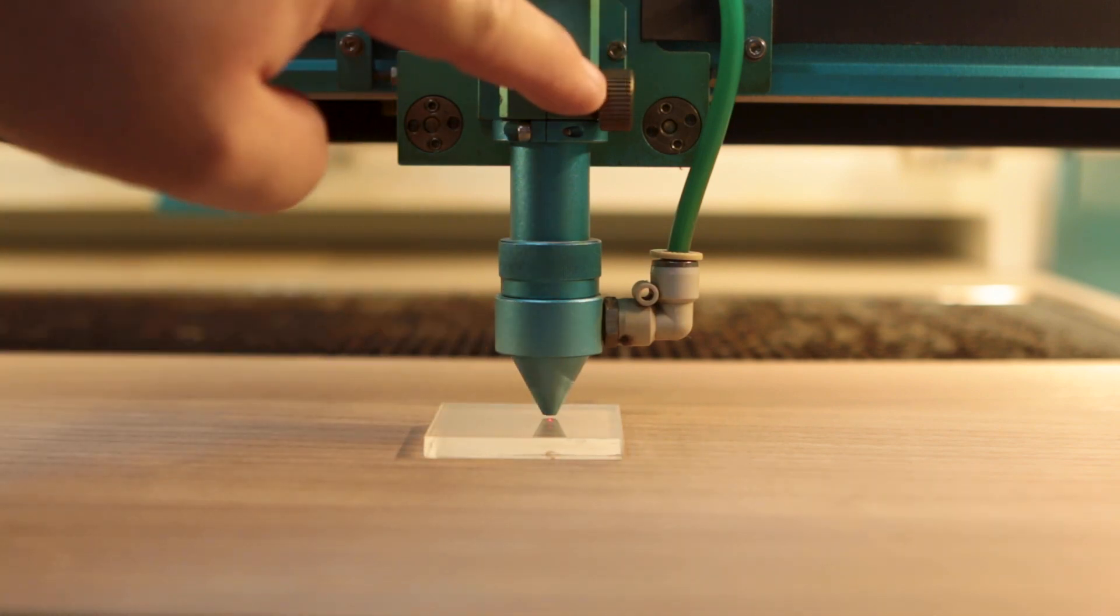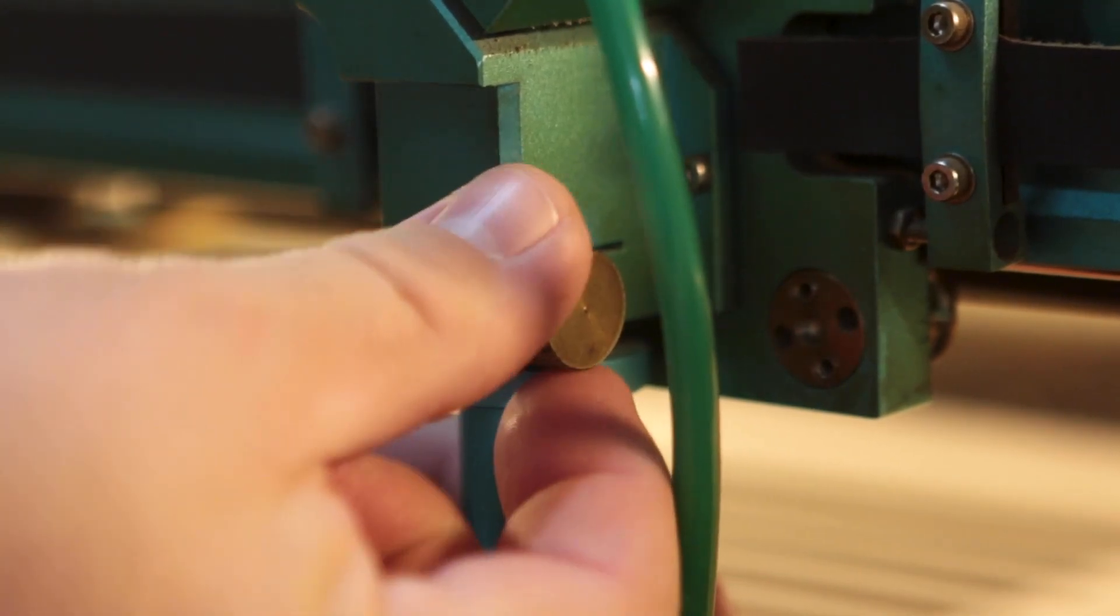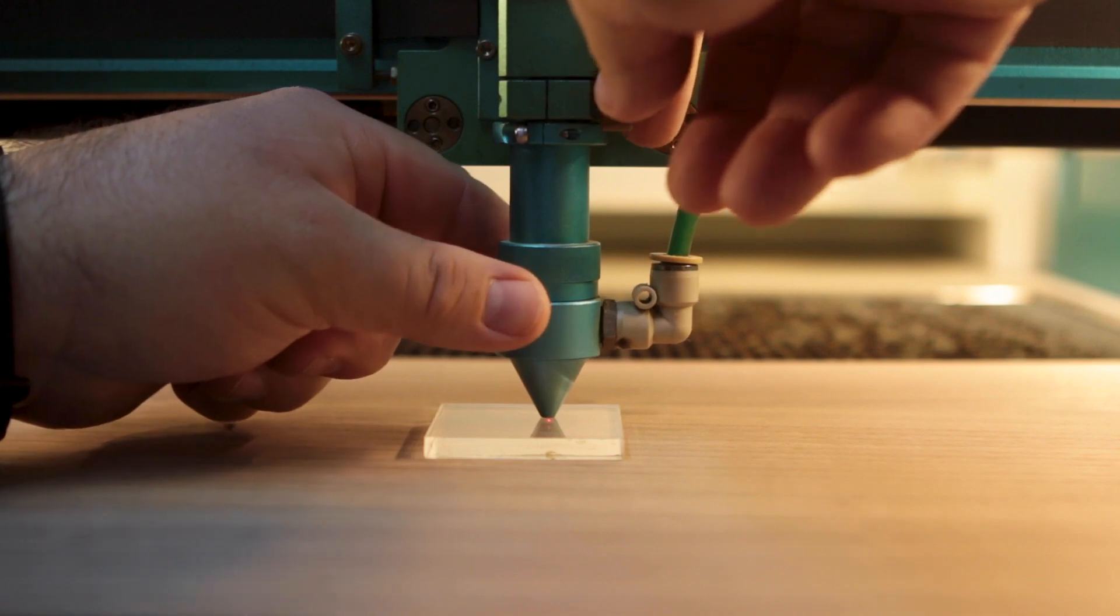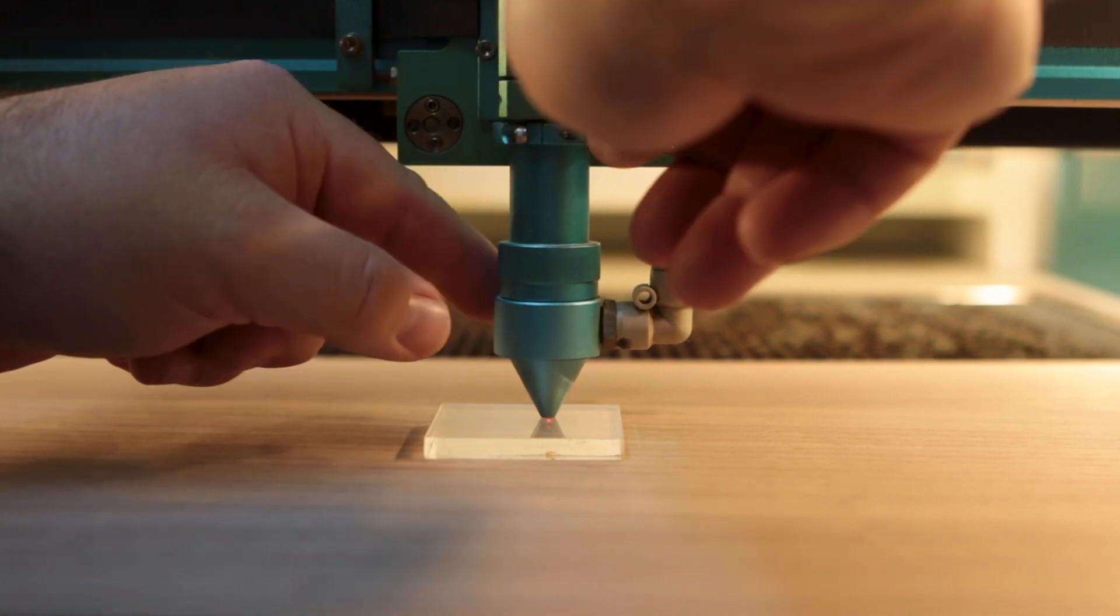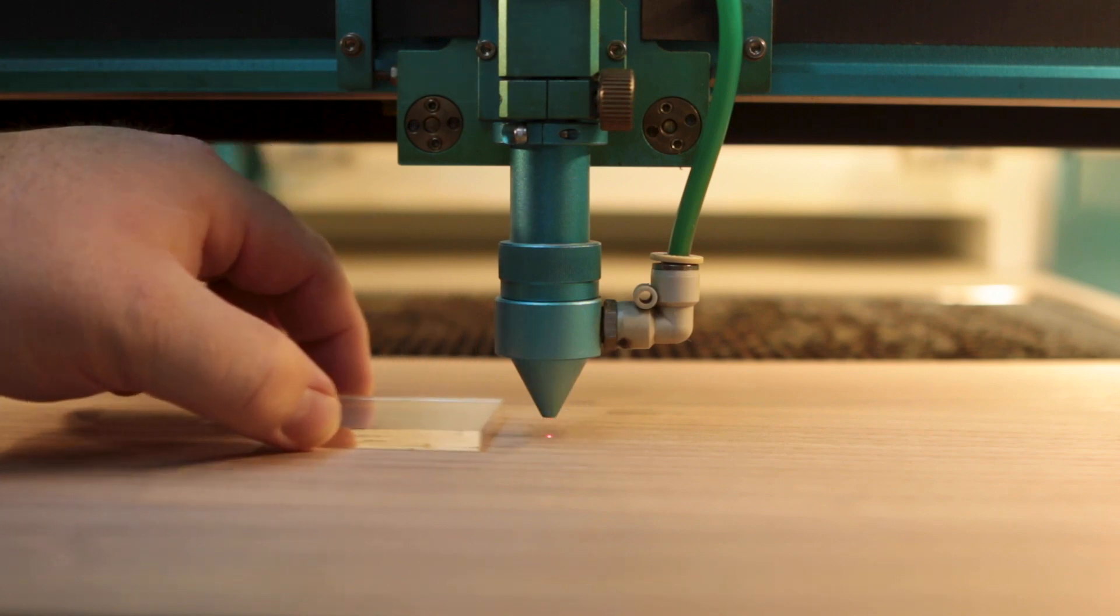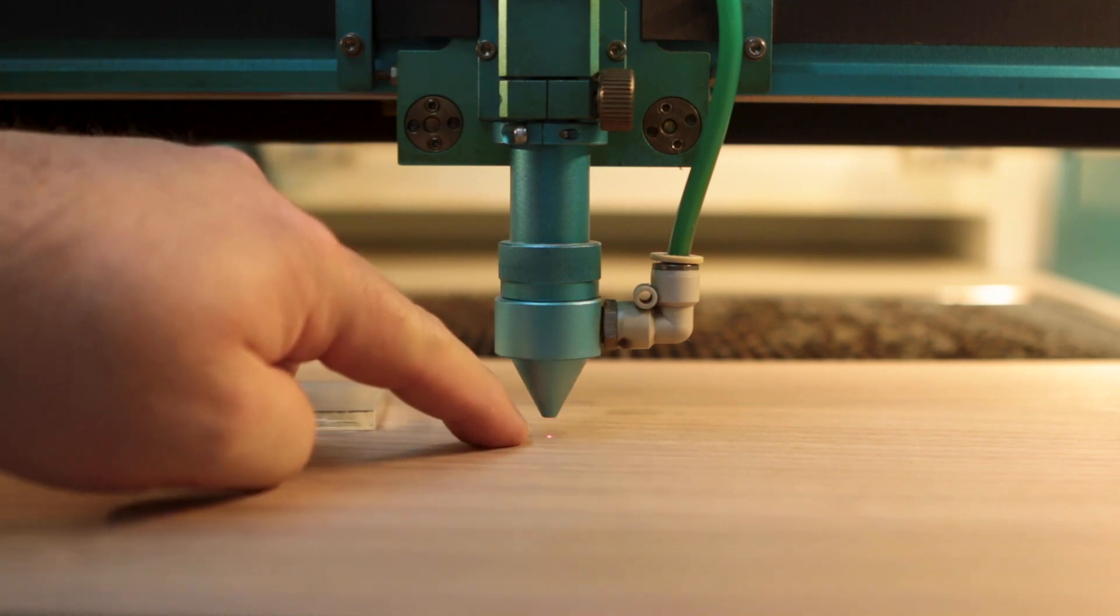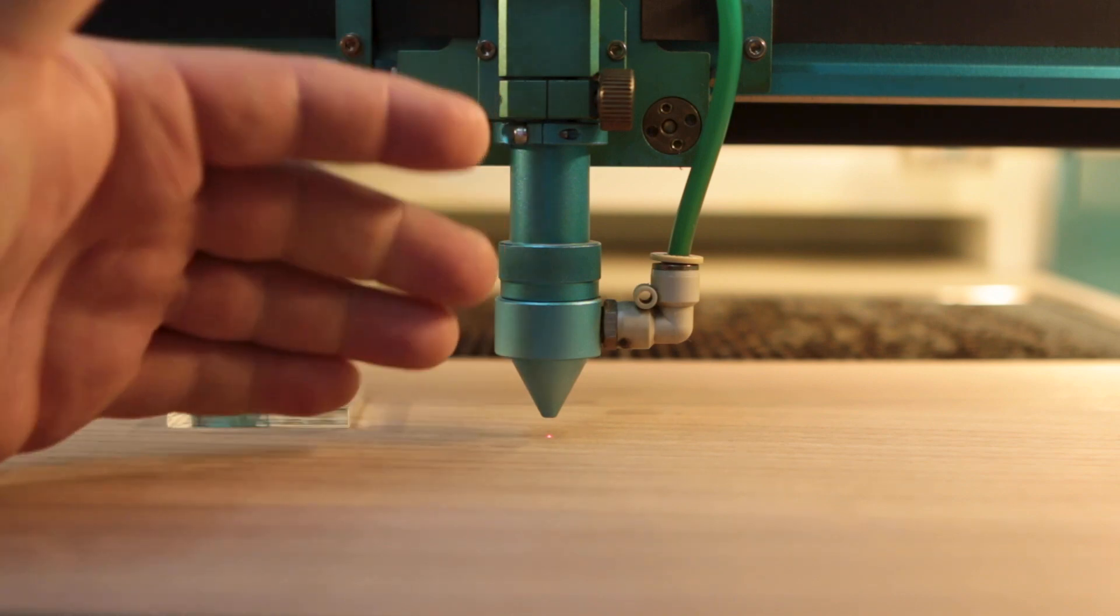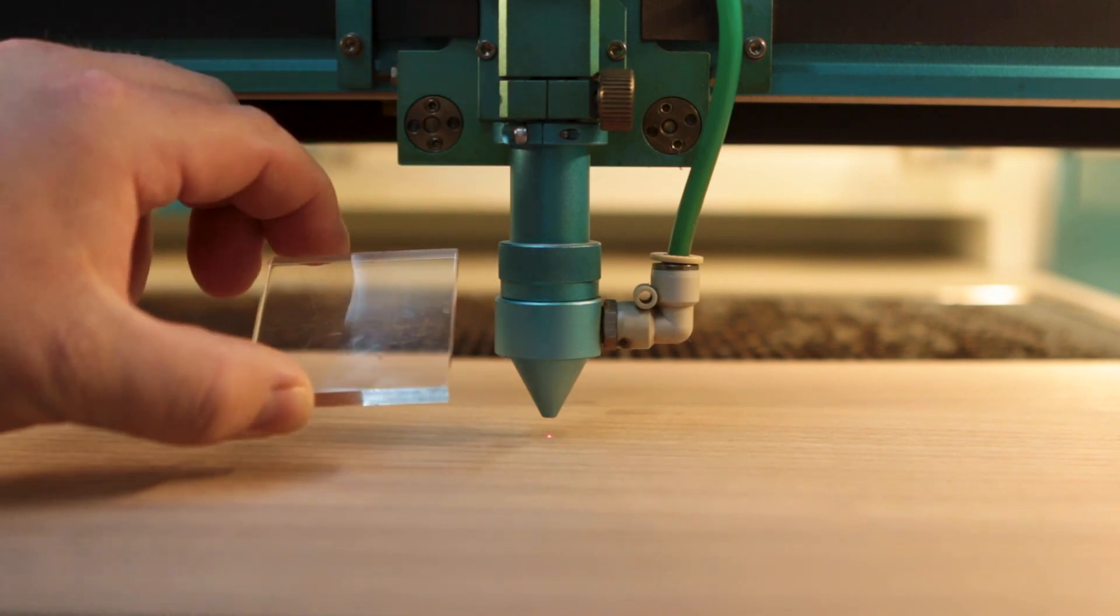You will notice this little thumb screw here on the side. So what you need to do is loosen it and it will drop your laser nozzle down just a little bit. So now it is touching that acrylic. You can move this acrylic piece out and you should be focused at this exact focus height of this acrylic piece. And that's how you set a manual focus using this.